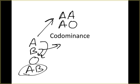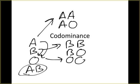For B, we have to be BB or BO. For O, we must be OO. And for AB, we must be AB.